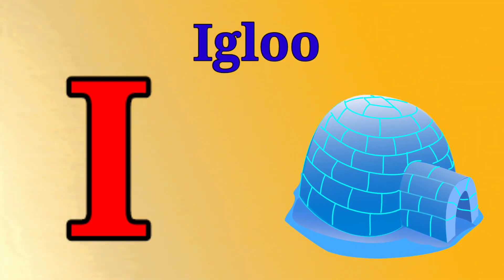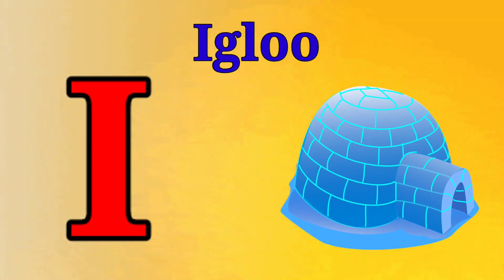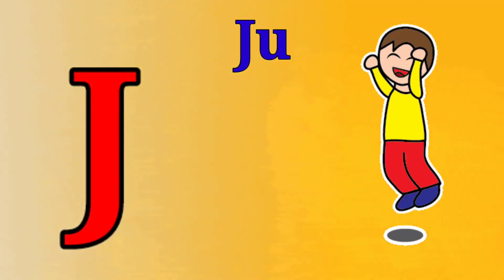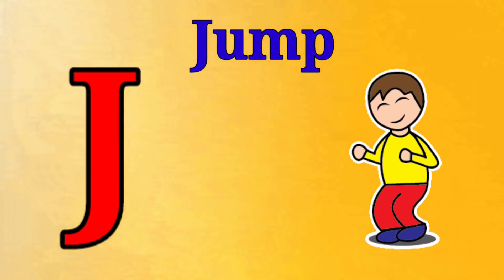I is for igloo, i-i-igloo. J is for jump, j-j-jump.